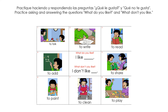Practice asking and answering the questions: what do you like? And what don't you like? Number one says to talk. Number two says to write. Number three says to read. Number four says to add. Number five says to share. Number six says to paint. Number seven says to clean. And number eight says to play.